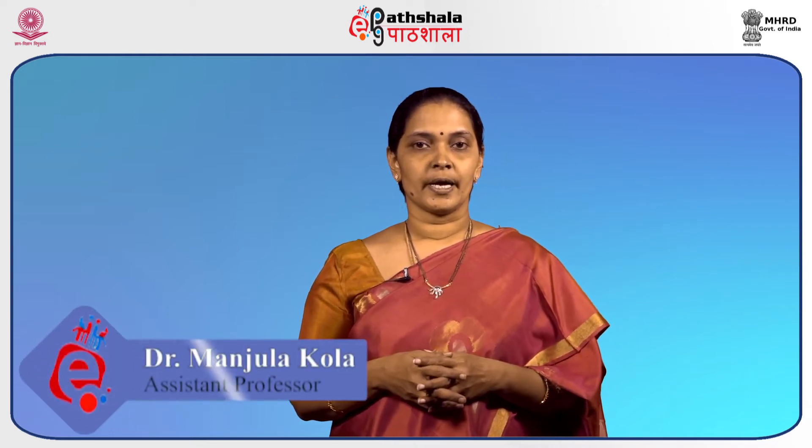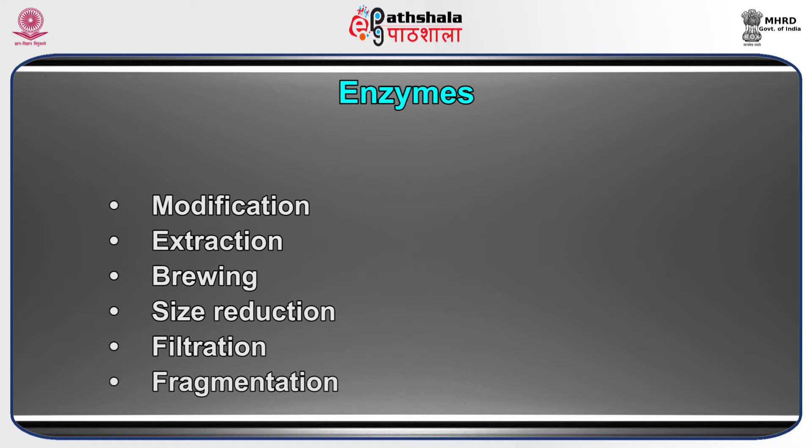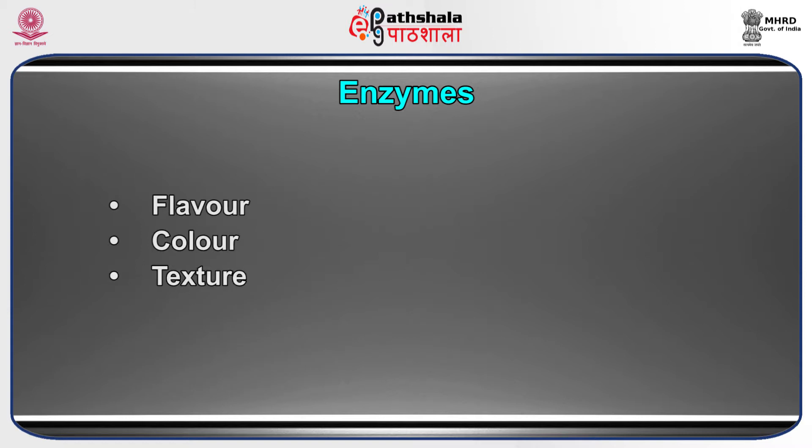Today's session is on the application of enzymes in food industries. Enzymes are the most useful catalysts in industrial applications. They perform specific, significant reactions essential for the production process while ensuring the quality of the end product. Enzymes are biocatalysts used in industrial production of various food products, and they are used in modification, extraction, brewing, reduction, filtration, and fragmentation of various foods to enhance flavor, color, texture, and appearance.